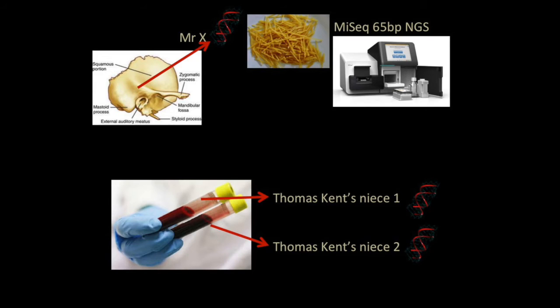The Ron Pinhasi lab got the DNA out of the Petros bone and gave it to us — it was very fragmented. We decided to go for something called MiSeq, a next-generation sequencing platform. The beauty of it is that it only requires 65 base pairs — not 450 as microsatellite analysis would need. So only 65 letters is what we needed.